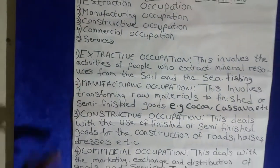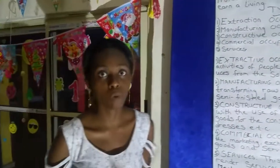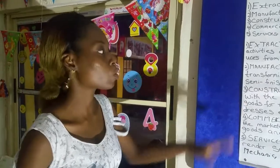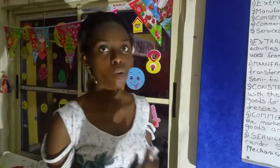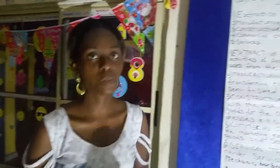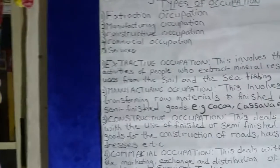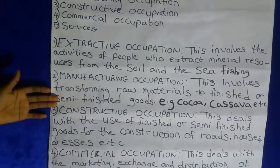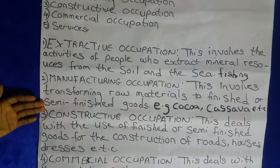The next one is manufacturing occupation. Now after you finish extracting your raw materials or resources, you can't use them like that — you have to manufacture them into something else. For example, your cocoa: once you extract it, you manufacture it into Bournvita or Milo for drinking. That's turning your raw material into a finished or semi-finished product. You also have cassava, which can be used to make garri or fufu for baking.